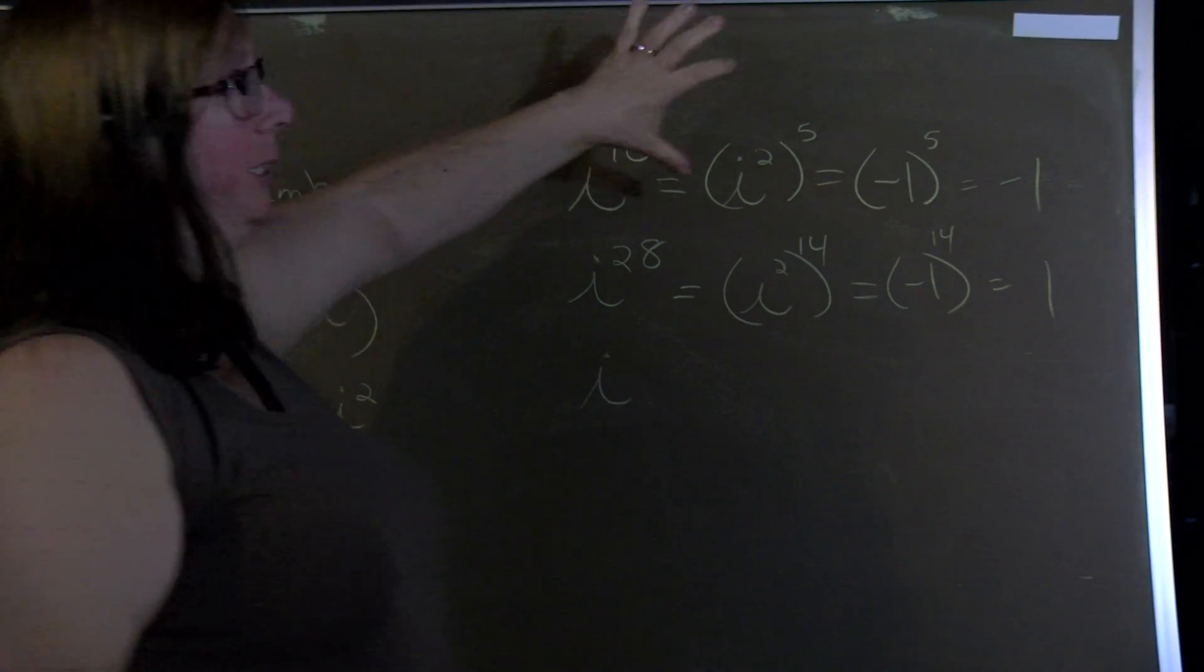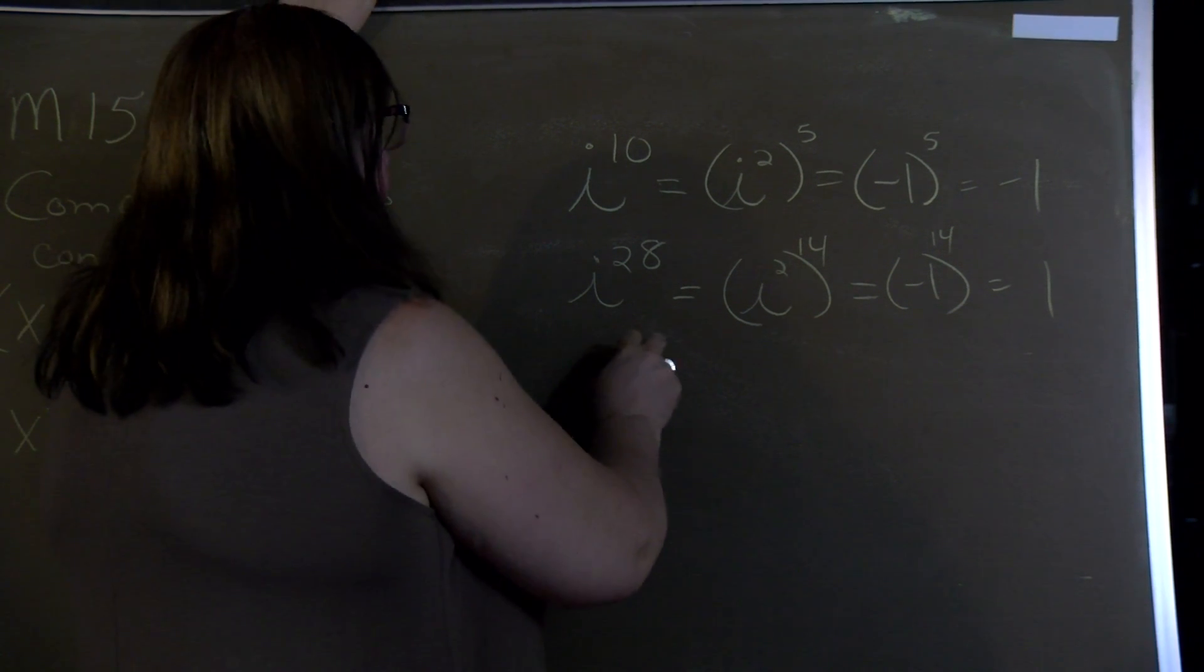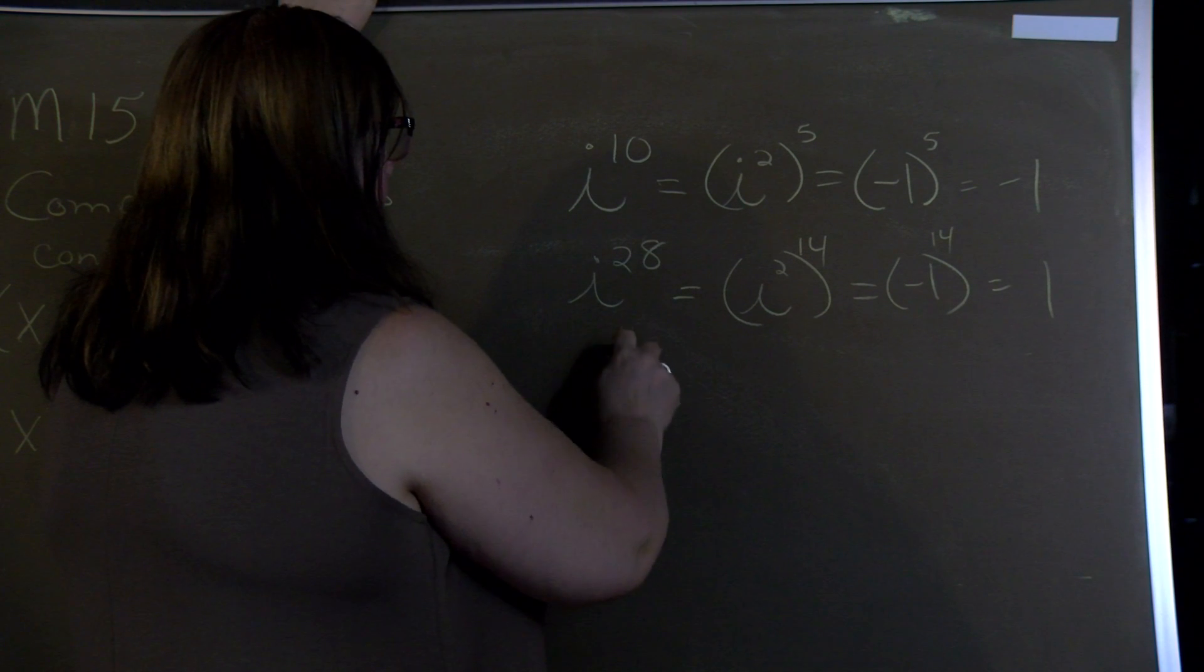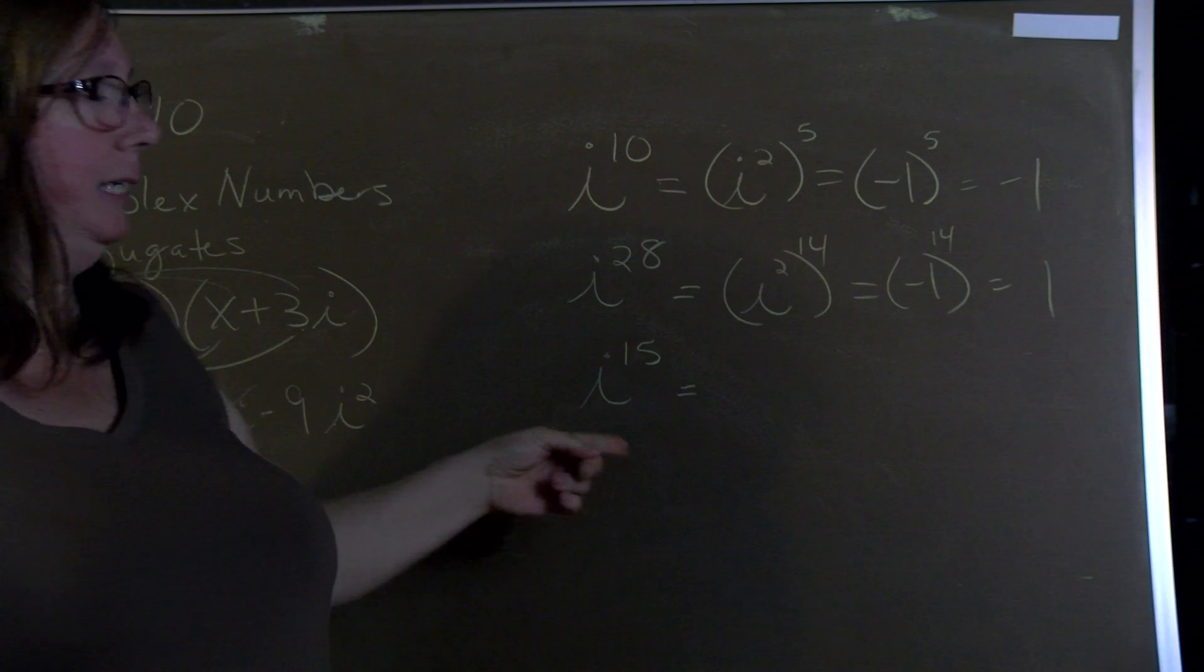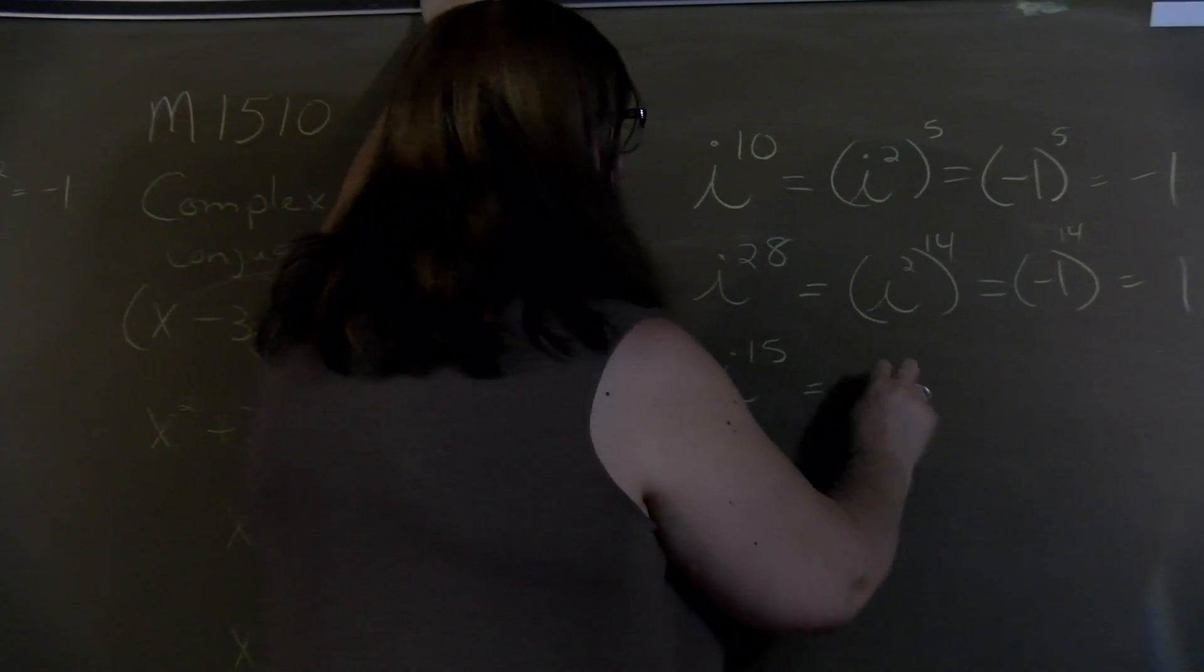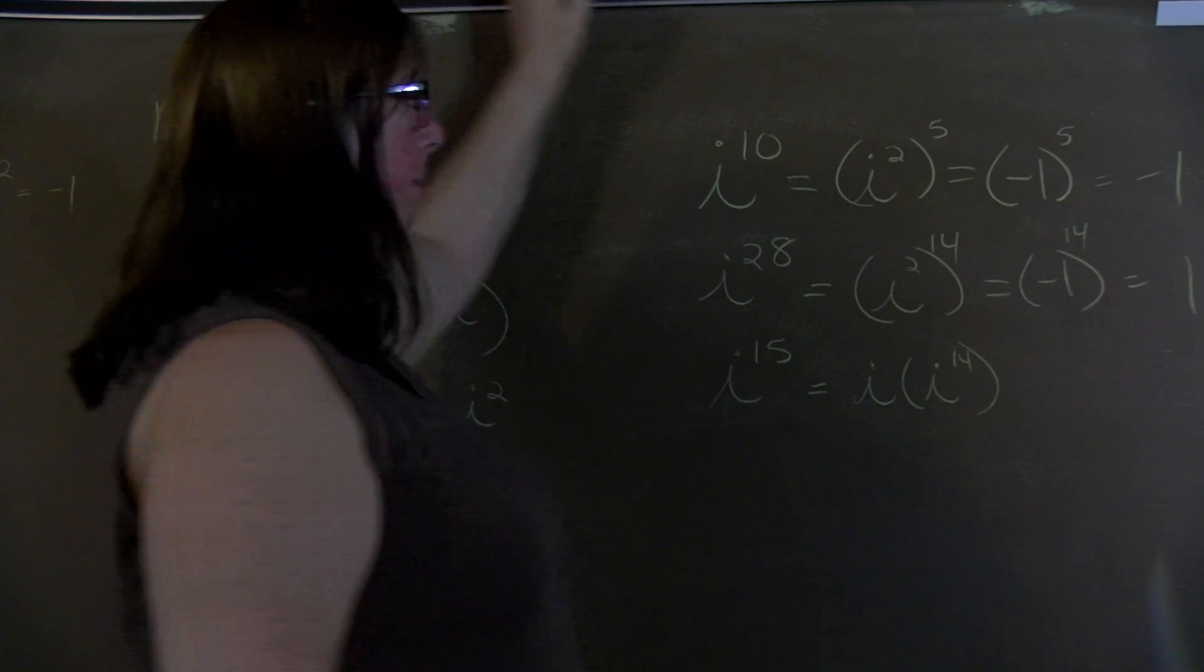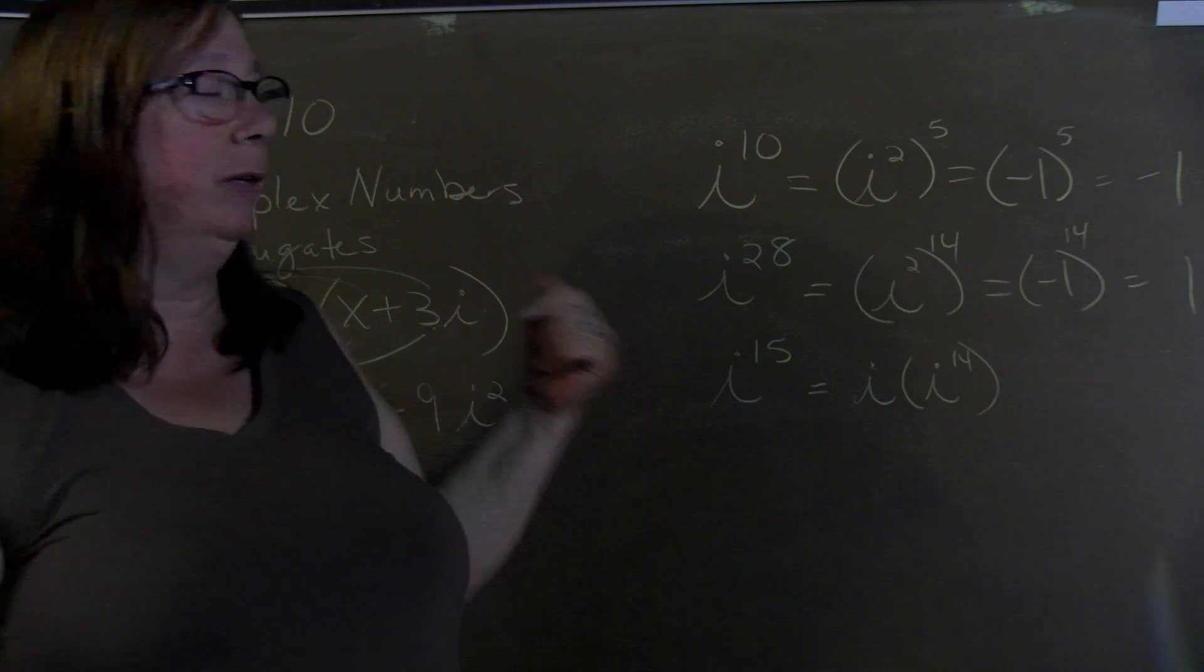Well that's really nice when it's even but what about when it's odd. So if we had 15, we could pull one of the i's out first. And then do the i to the 14th. And we're left with an i as part of our answer.